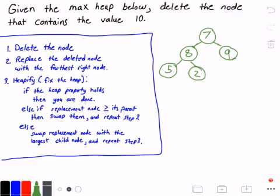All right, now we go to step three and we heapify or fix the heap. So we first check that the heap property holds true. In this case of a max heap, the heap property is such that the parent node's value is greater than or equal to its children's values. So we check to see if seven is greater than both its children, which is the node that contains the value eight and the node that contains the value nine.